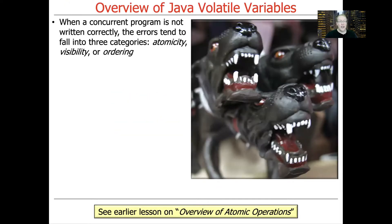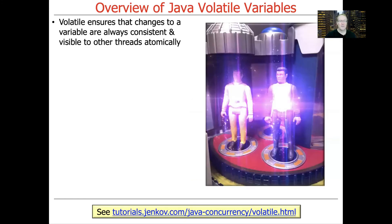When a concurrent program is not written correctly, as we've discussed before, the errors that are incurred tend to fall into three categories: atomicity, visibility, and/or ordering. Some programs will have one of these; some programs will have multiple of these kinds of problems if you don't follow the synchronization patterns and practices correctly.